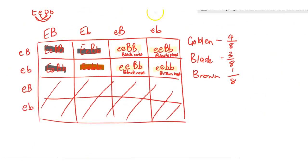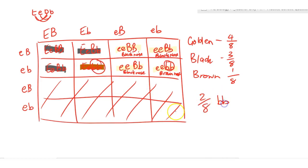What percentage will be homozygous for B? Looking at the Punnett square, 2 out of 8 will be homozygous for the recessive version of B — little b little b — and 2 out of 8 will be homozygous for the dominant version of B — big B big B.